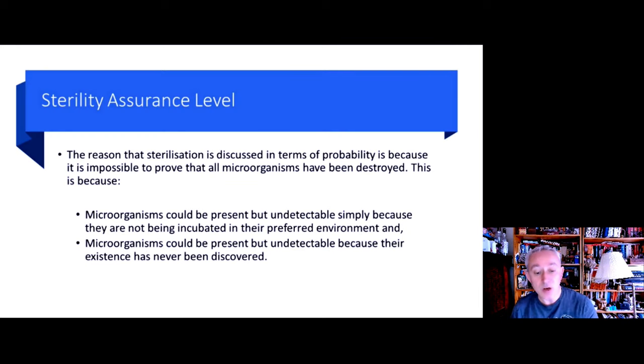Also with the sterility assurance level, the reason that sterilization is discussed in terms of probability is because it's impossible to prove that all microorganisms have been destroyed in a batch of product. This is because microorganisms could be present but undetectable. It could be that the cultural conditions that we might use to try and show sterility are not suitable for recovering those microorganisms, or it could be that the microorganisms themselves have a non-culturable aspect—they're active, they're viable, but they cannot be cultured using conventional recovery methods. This is one of the reasons why the sterility test is regarded as somewhat weak.